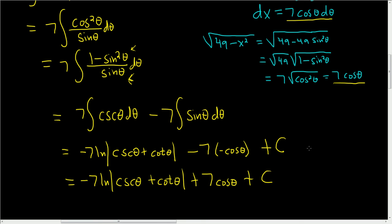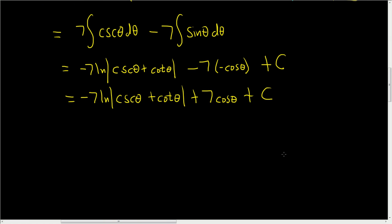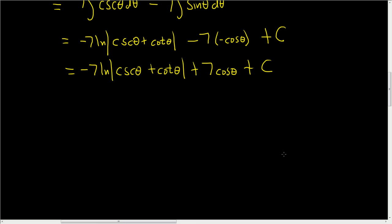Now we're not done. We have to go back to our original substitution, which was x equals 7 sine theta, and use that to draw a triangle. So recall that our original substitution was x equals 7 sine theta. That means that the sine of theta is equal to x over 7.